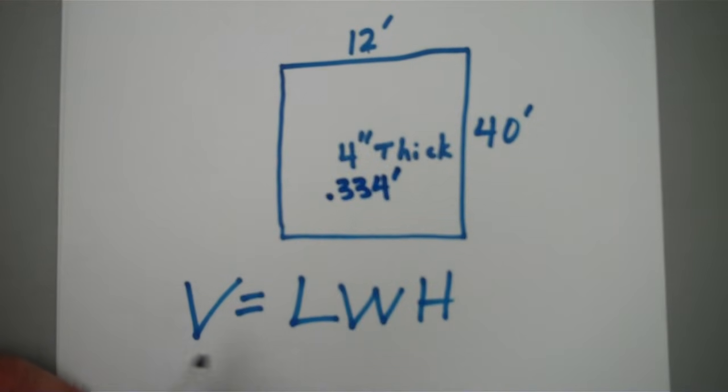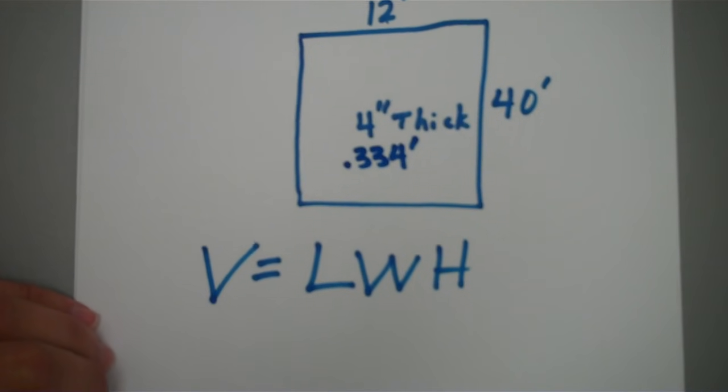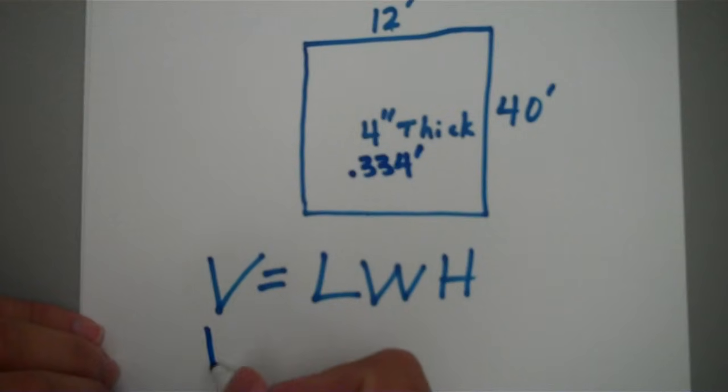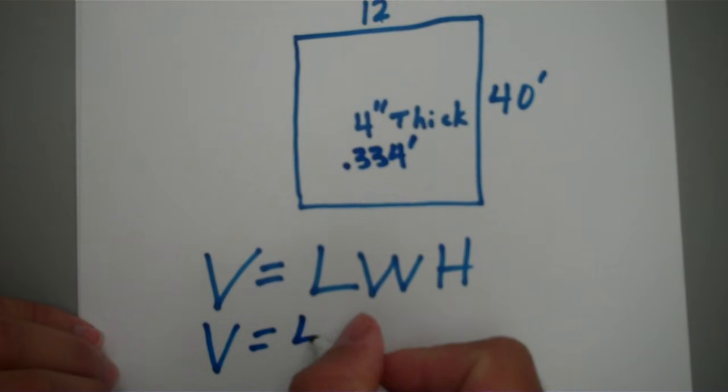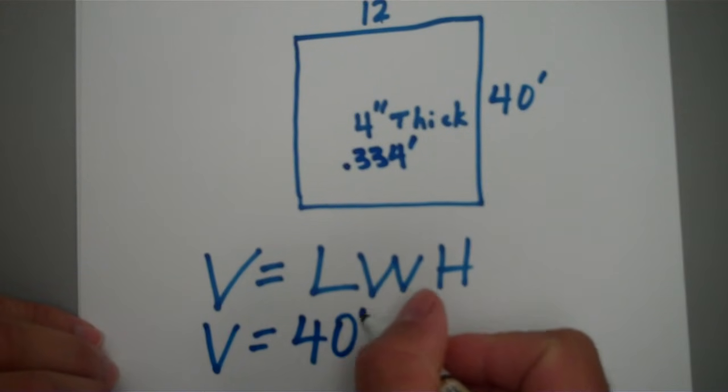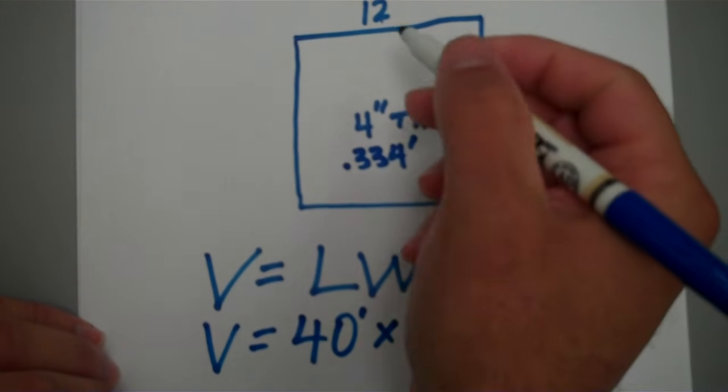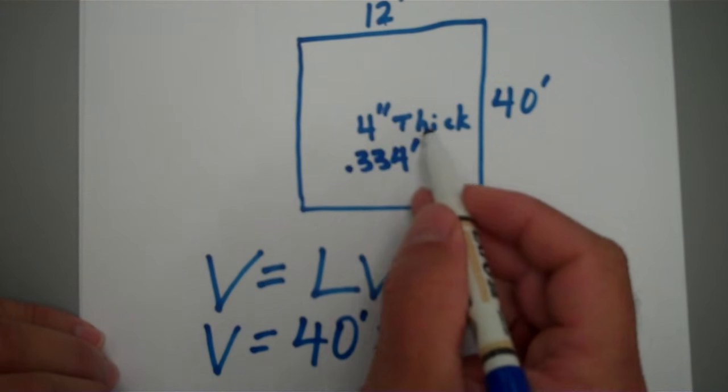So 4 inches and 0.334 feet are the same thing. Now let's plug in some stuff. Volume equals my length, which is 40 foot as you see here. My width is 12 foot as you see up here at the top, and then of course my thickness will be my height and it is 0.334 feet.